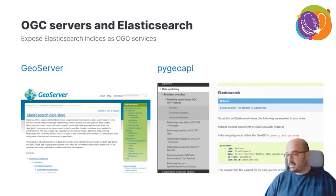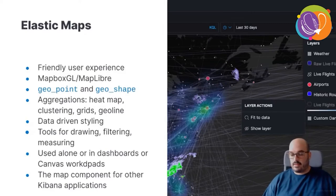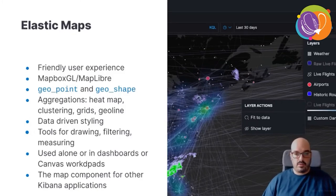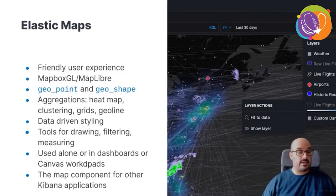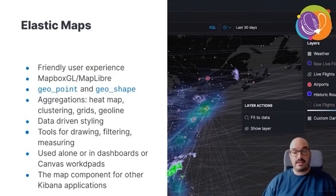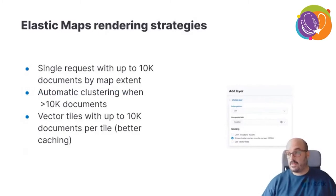In Kibana, Elastic Maps is a MapboxGL application (currently migrating to MapLibre) that works with both geopoint and geoshape data types. It performs aggregations, helps you style data based on index values, lets you draw new features, filter, and measure. You can use it standalone or embed it in dashboards and Canvas in Kibana. It is also used as a component within other applications such as machine learning, making Elastic Maps the geospatial window for the entire stack.